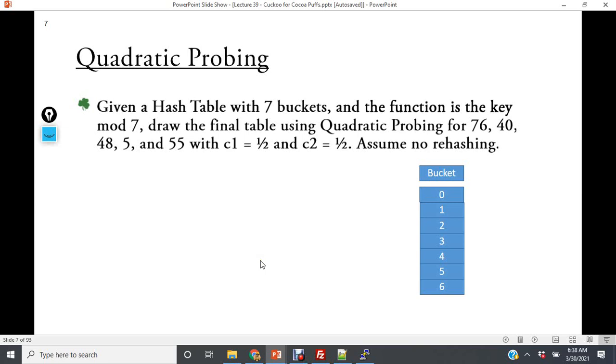In this example, you are given a hash table with 7 buckets, and the function is the key mod 7. Draw the final table using quadratic probing for 76, 40, 48, 5, and 55 with c1 = ½ and c2 = ½. Assume no rehashing.